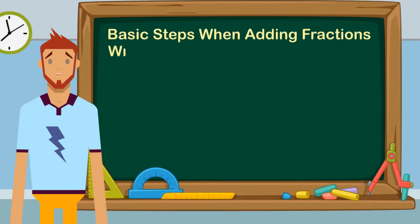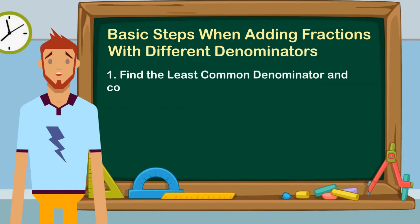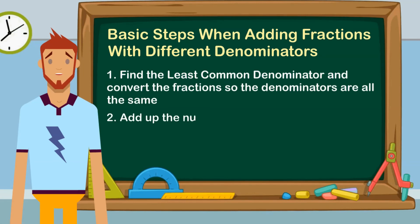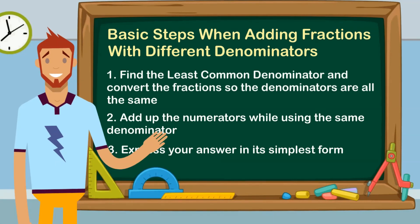Remember these basic steps when adding fractions with different denominators: First, find the least common denominator and convert the fractions so the denominators are all the same. Next, add up the numerators while using the same denominator. And lastly, always express your answers in their simplest forms. Now you know how to add fractions with different denominators. Thanks for watching!